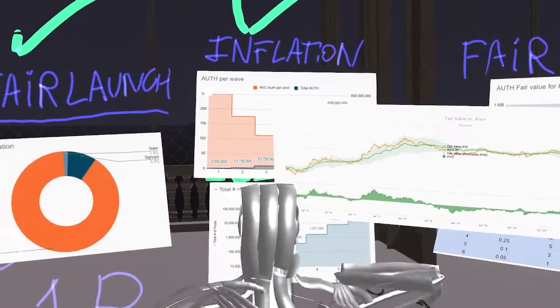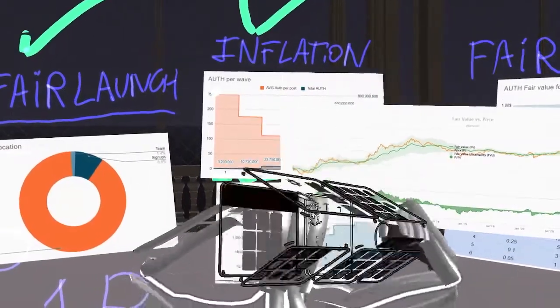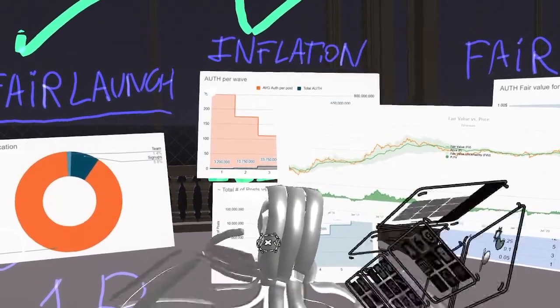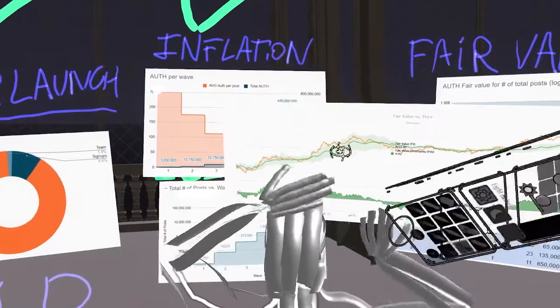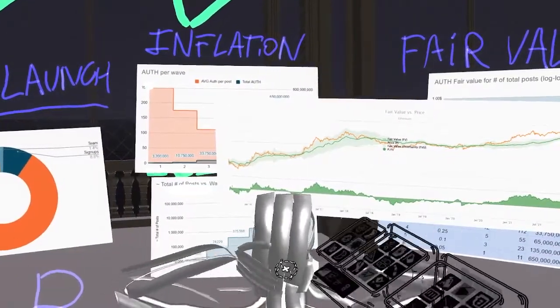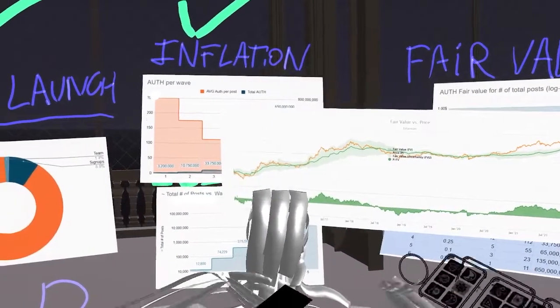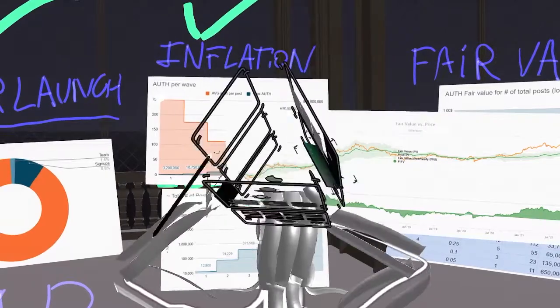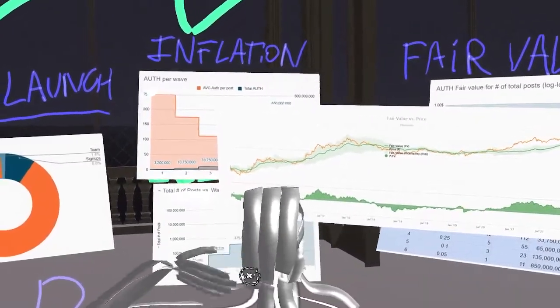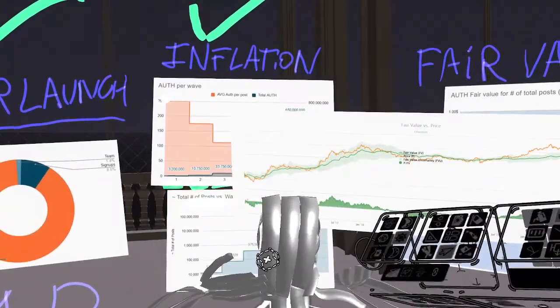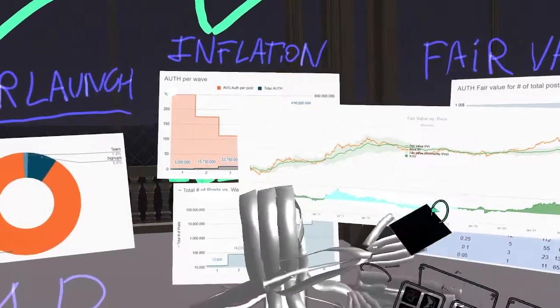Auth is based on Ethereum, so we're going to take the auth fair price as a base and try to estimate how much does it cost for the users to mine auth. So you mine auth by paying Ethereum gas fees, right? And having the fair price is going to answer the question: should I buy auth or should I mine auth? Which one is going to be more expensive for me? And this is why it's a very important metric, because it's going to give us this baseline for the price of auth.